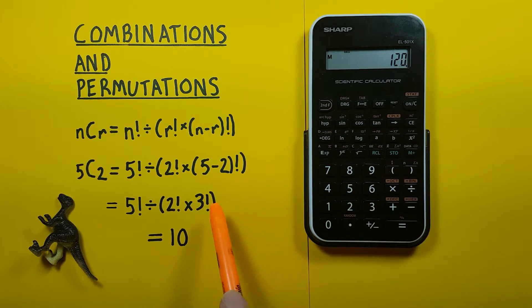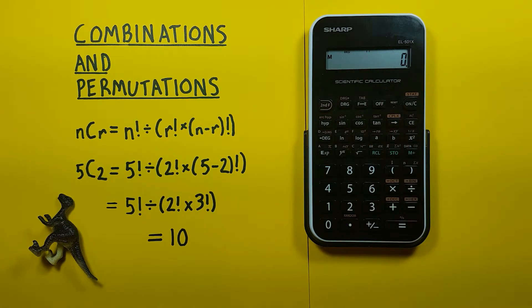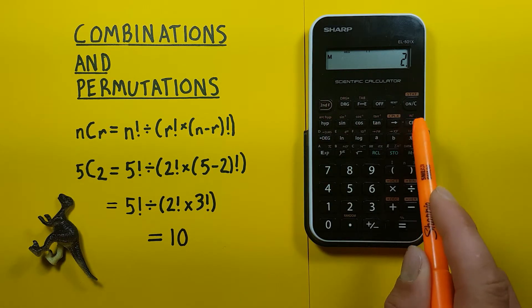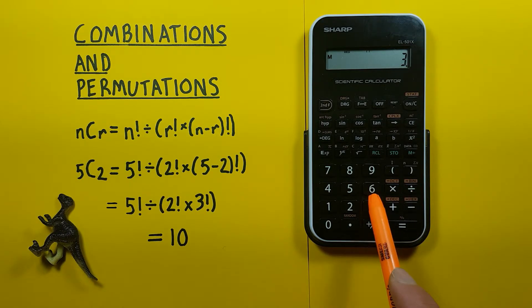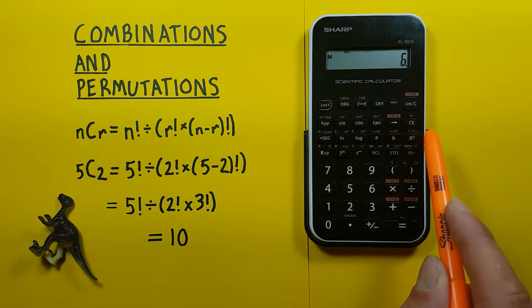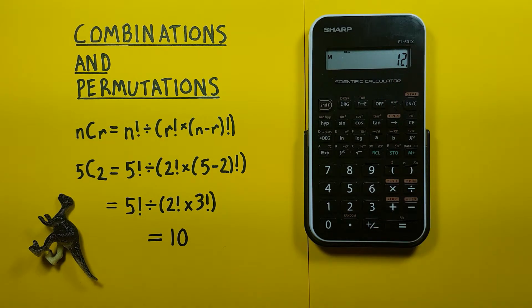and then we'll use our brackets to make sure that this multiplication happens before the division. So bracket, you can see in the top of the screen there's a bracket letting us know we're using brackets now. Two second factorial times three second factorial, close our brackets we get 12 there and then we press equals to finish the calculation